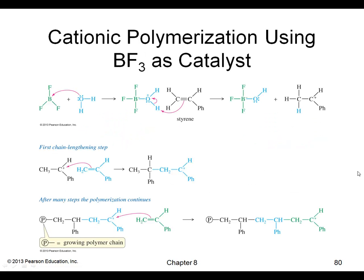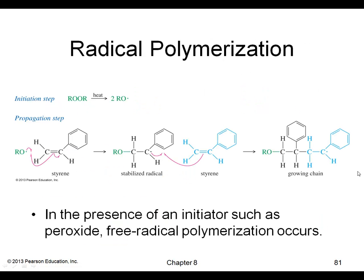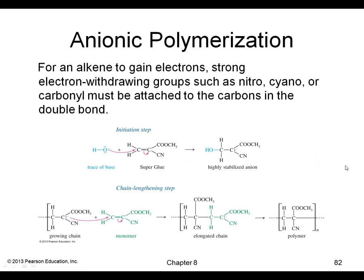Another way to do cationic polymerization uses BF3. Radical polymerizations: if you take styrene and a radical, you can start a free radical polymerization of styrene to eventually make polystyrene. And anionic polymerizations start with a base to kick off the polymerization — here's a way to make super glue. And that's it.